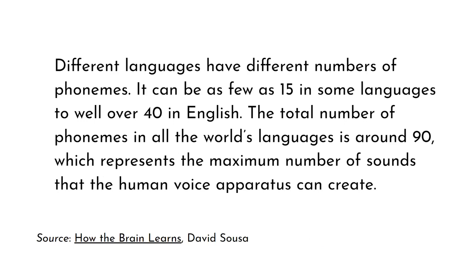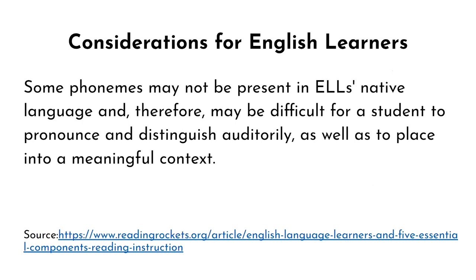Different languages have different numbers of phonemes—as few as 15 in some languages to well over 40 in English. The total number of phonemes in all the world's languages is around 90, which represents the maximum number of sounds the human voice apparatus can create. Pay special attention to the phonological development of second language learners in your classroom. Some phonemes may not be present in an English language learner's native language, and therefore may be difficult for the student to pronounce, distinguish auditorily, and place into a meaningful context.